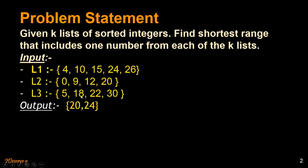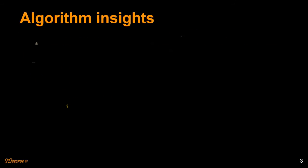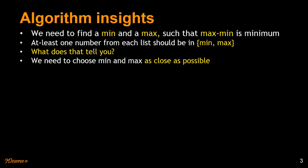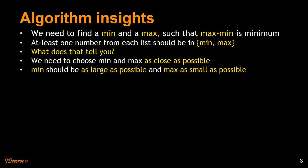Let's understand the insights we can use to solve this problem. We want to find a minimum from amongst all the lists and a maximum such that both comprise a range containing at least one number from each list. We want to minimize that range, so the minimum should be as large as possible and the maximum should be as small as possible.